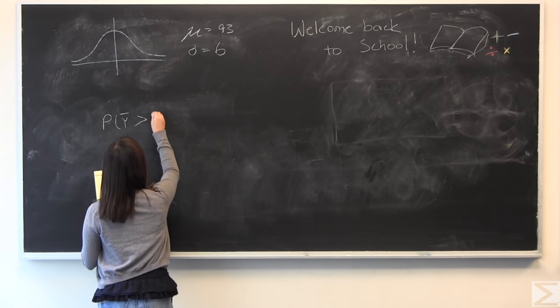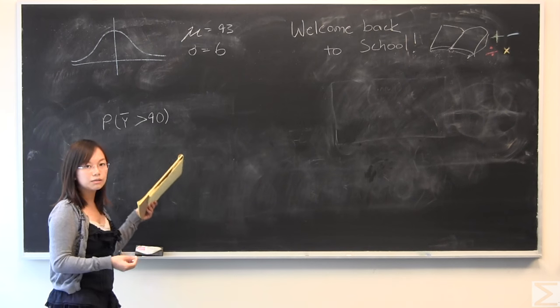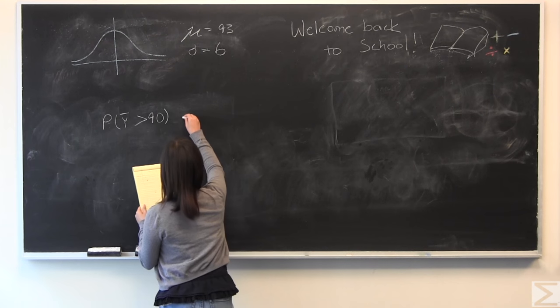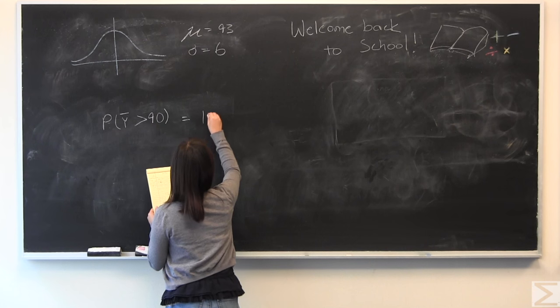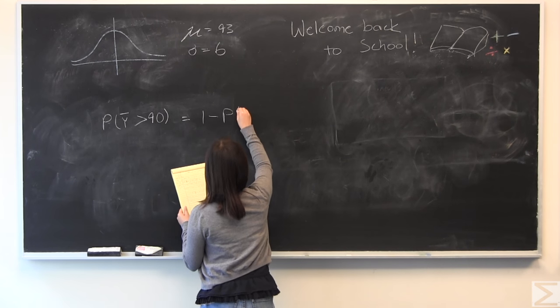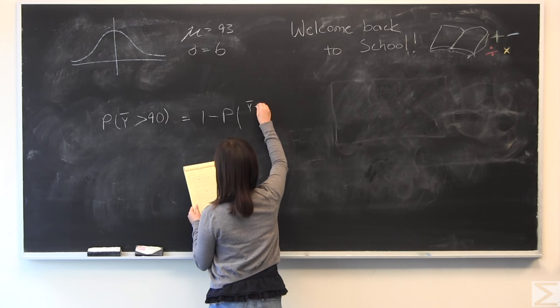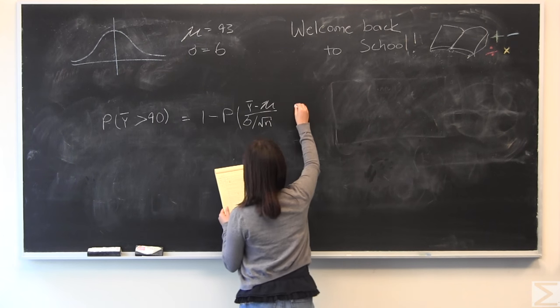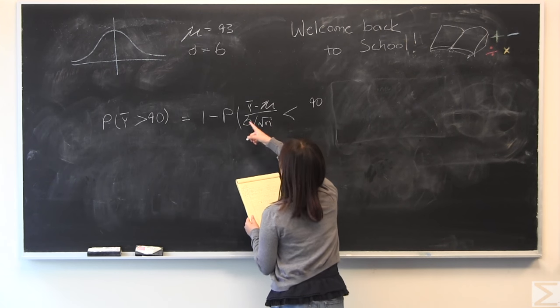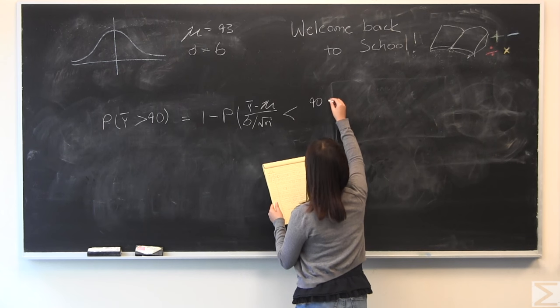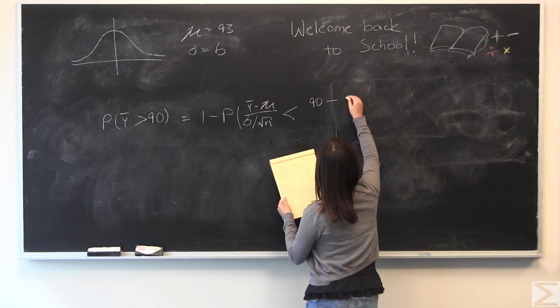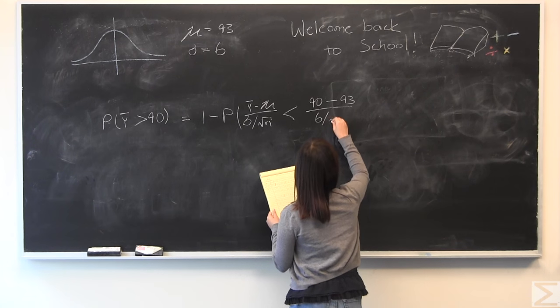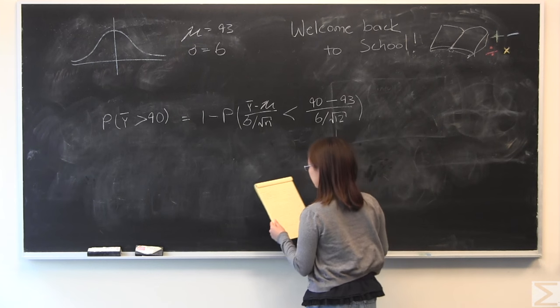Let's use y-bar for the average. So the probability of y-bar is greater than 90. I'm going to start by turning it into 1 minus p and apply y minus average over standard deviation over square root of n. We have 90 for y, the population average is 93, divided by standard deviation 6, and n was given as 12.